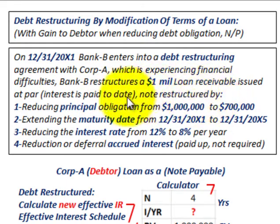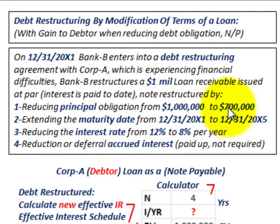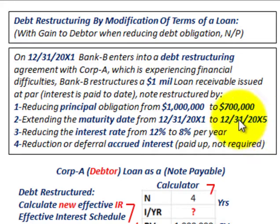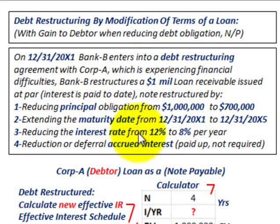The note is restructured as follows. Generally when restructuring these loans, we've got four elements to look at. Number one, they're going to be reducing the principal obligation from one million dollars down to seven hundred thousand dollars — Corporation A would only have to pay Bank B back $700,000 at maturity. Number two, they're extending the maturity date from 12/31/20X1 to 12/31/20X5, four years out. Number three, they're reducing the interest rate from 12% to 8% per year.